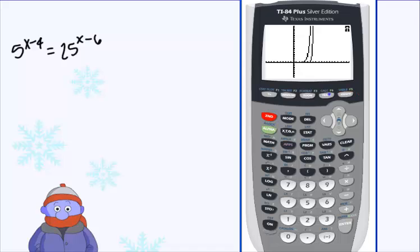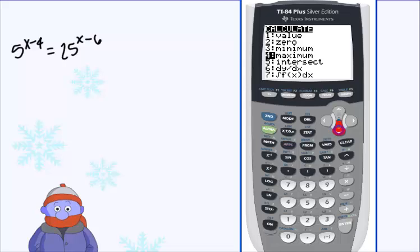So let's see if our calculator can find the point of intersection even though we can't technically see it yet. So hit second and trace. And when you do that, the thing we're interested in is the intersect, which is choice number 5. So you can come down to number 5 and choose enter, or you can just click enter on 5, or you can just click 5. Either one.